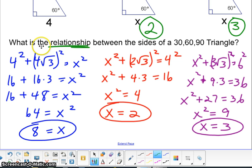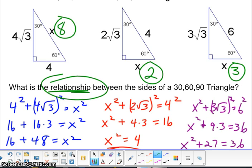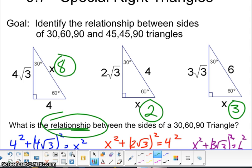Now let's talk about the relationship between the sides of a 30-60-90 triangle. You may have noticed already that from the leg, the shortest leg, to the hypotenuse, it doubles in every single situation. And that is true for all 30-60-90 triangles. You may also notice that from the smallest leg to the longest leg...